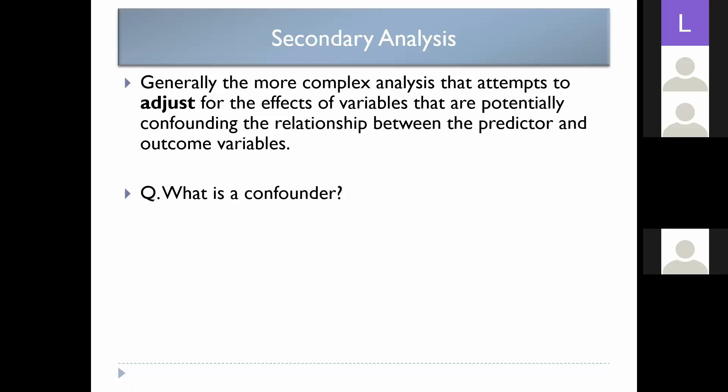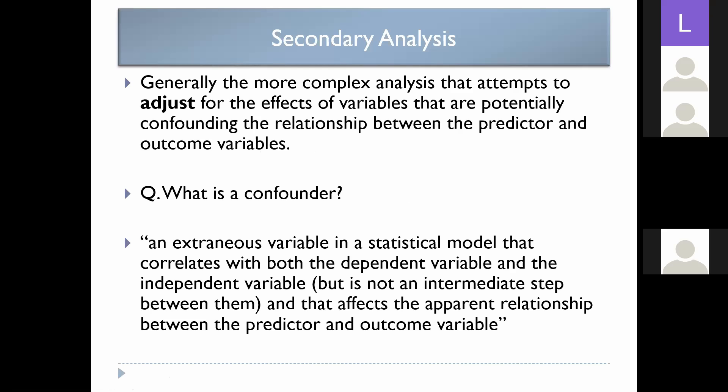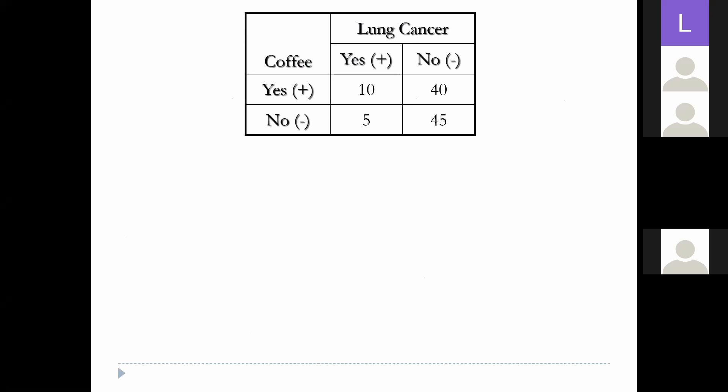Secondary analysis is basically adjusting for confounders — the more complex analysis that attempts to adjust for the effects of other co-variables. What is a confounder? It's an extraneous variable in a statistical model that correlates with both the dependent variable and the independent variable, not being an intermediate step between them, and that affects the apparent relationship between the predictor and the outcome variable. Let me work through a mathematical example to give you a slam dunk on what actually happens at the level of a confounder.